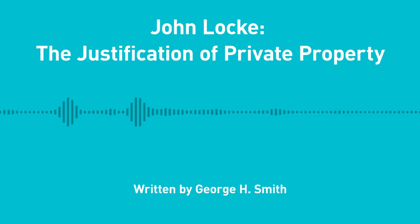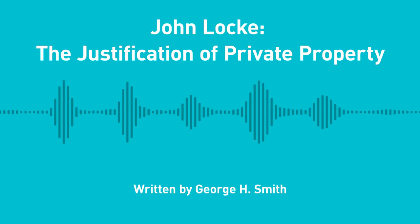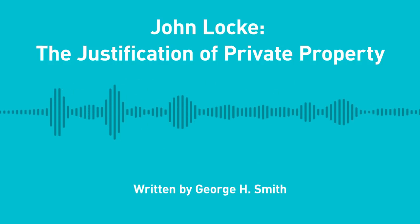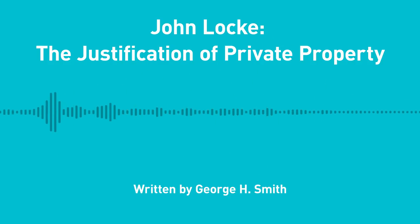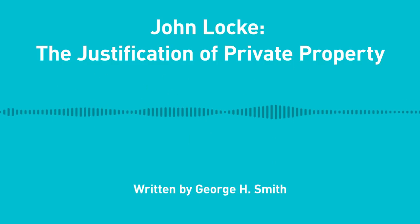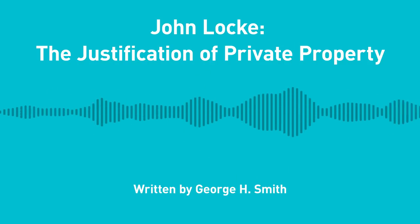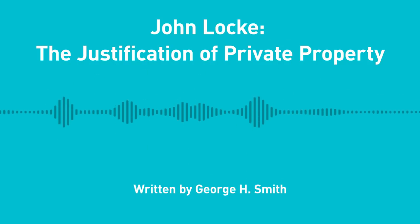My last essay discussed John Locke's theory of a negative commons — the moral status of natural resources prior to the emergence of private property, a situation in which every person had an equal right to use unowned land and other natural goods. I included this topic in my series on Free Thought and Freedom because it was germane to understanding how natural law philosophers during the 17th century moved from the traditional Christian doctrine of private property to a more secular approach. But it would be an unwarranted stretch to include additional essays on Locke within my series, so I hereby begin a new series devoted to Locke's ideas.